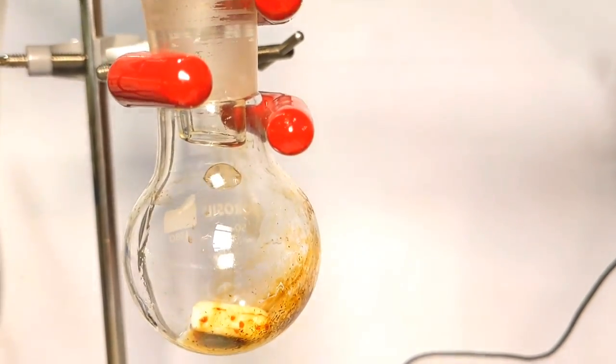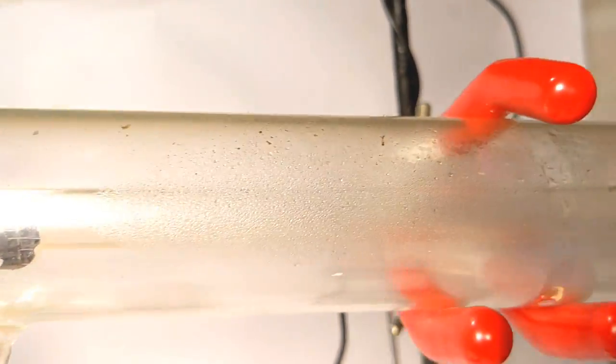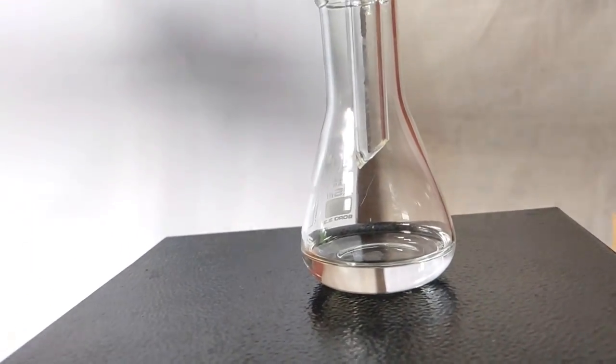In the distilling flask I was left with some dark red colored material. In the receiving flask I got the nice crystal clear cyclohexanone.